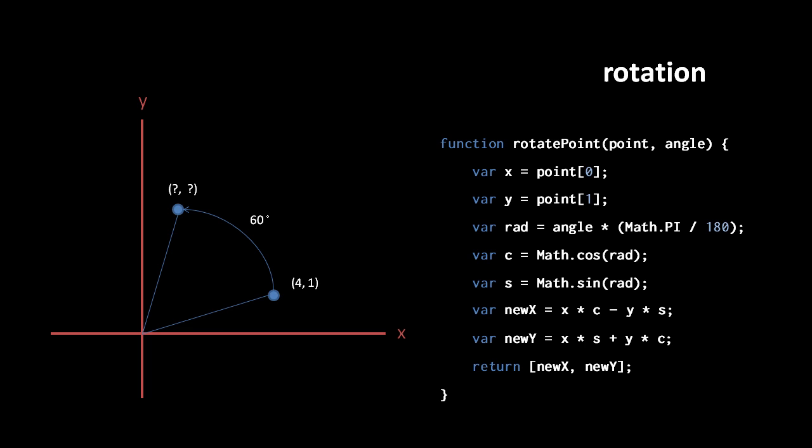Translating the formula into code, we define a function rotate point, which takes a point parameter specified as an array of an x and y value, and takes an angle as a value in degrees. Inside the function, we first unpack point into x and y variables, then convert from degrees to radians by the formula degrees multiplied by pi divided by 180. With the angle in radians, we get the cosine and sine of our angle, which we'll call c and s for short.